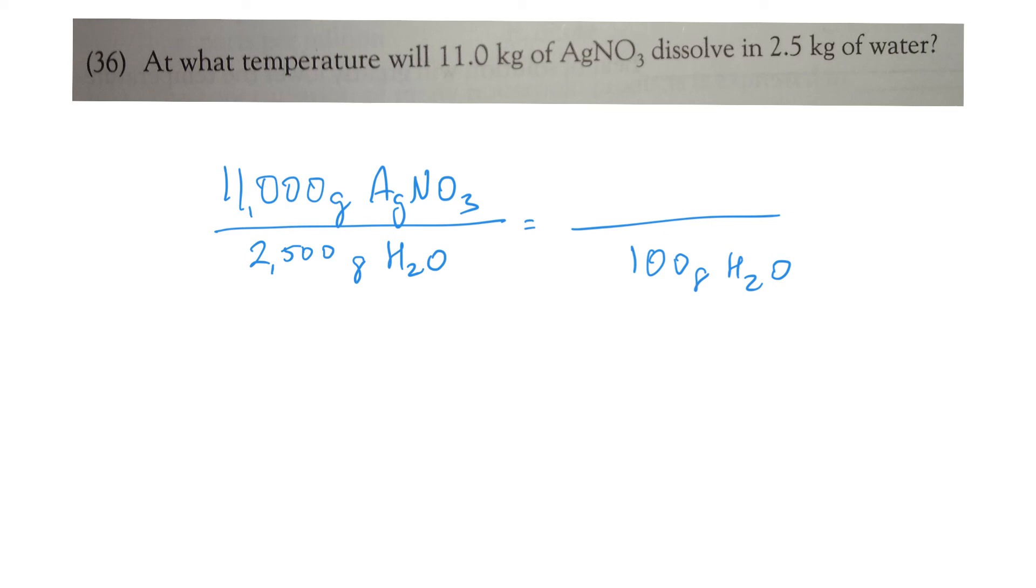And then do you remember how we solve these types of problems? We're going to cross multiply this times this, take that answer and divide by the 2,500, and that will be your answer. So cross multiply, divide, and you'll have your answer.